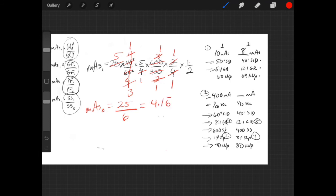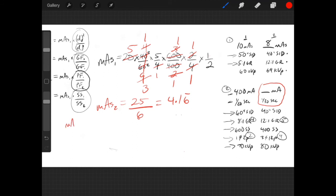Now we're not done yet. If you notice, it's asking for mA. So if you use your egg, like I like to use, mAs equals mA times time. I'm looking for mA. So if I cover mA with my finger, it's mAs divided by seconds. So mA equals 4.16 divided by 1/30th, or you can multiply times the reciprocal, 4.16 times 30 equals 125 mA.